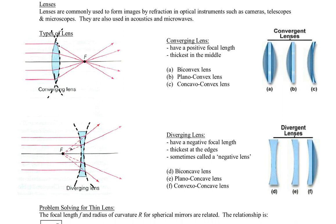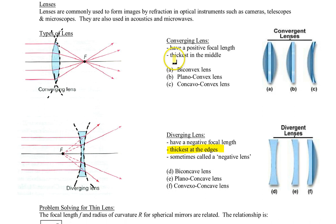Over here on the right side there are a variety of shapes of diverging and converging lenses. The key to distinguishing which is which: diverging lenses are thinnest in the middle and thick at the edges, whereas a converging lens is thickest in the middle.